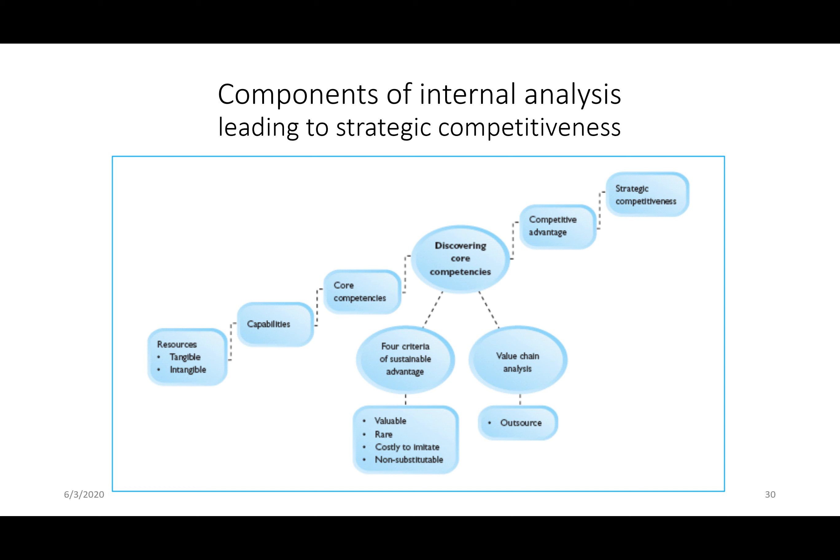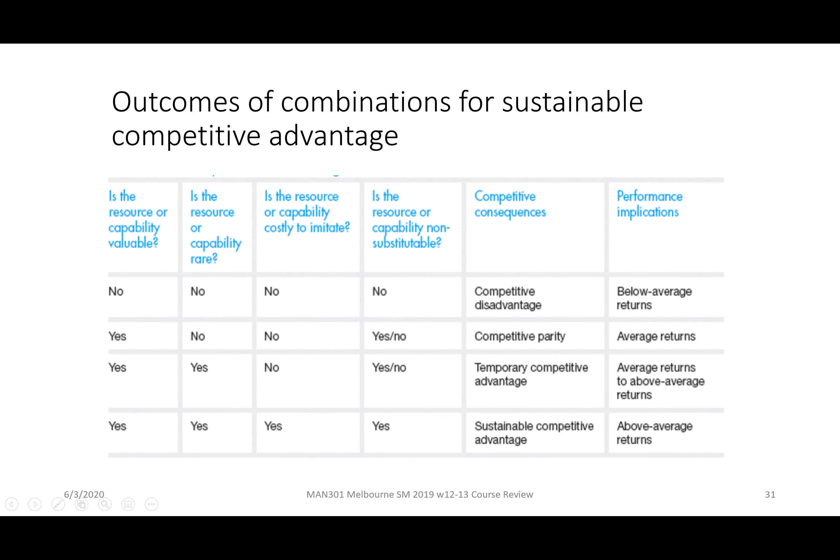Your core competency leads to competitive advantage, which can lead to strategic competitiveness. The VRIO questions are: is the resource or capability valuable? Is it rare? Is it hard to imitate? Is it non-substitutable? If the answer to all is no, you are at a competitive disadvantage and get below average returns. If a resource is valuable but not rare, not costly to imitate, and may or may not be substitutable, you are at competitive parity — because competitors can access the same resource — and that gets you average returns.